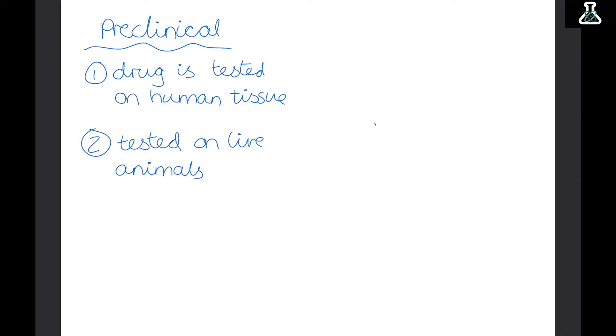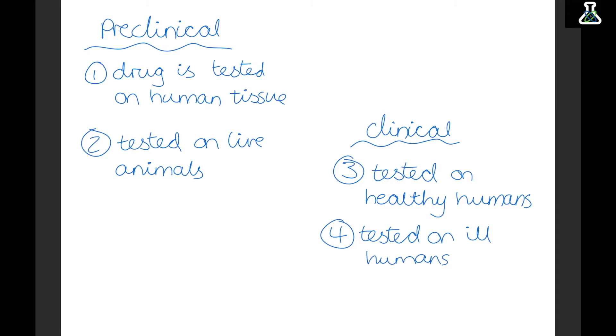Now the next stage are the clinical trials. So this is where we begin to use humans. The first stage is that it's tested on a group of healthy humans. And this is a really small group. And this is to check that there are no severe side effects. After that, we begin to test it on a larger group of ill humans. So people with the disease we're trying to treat. And then if this stage works, we move on to large trials where we test loads and loads of healthy humans.